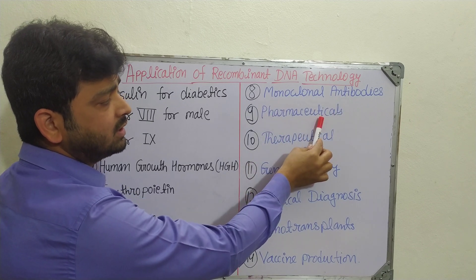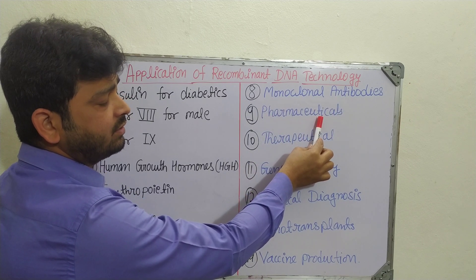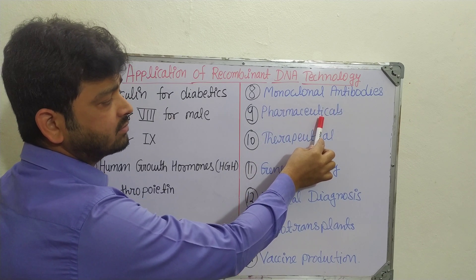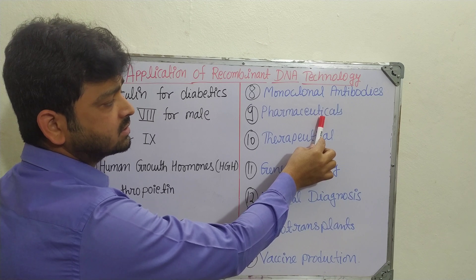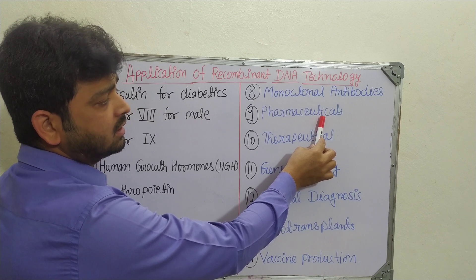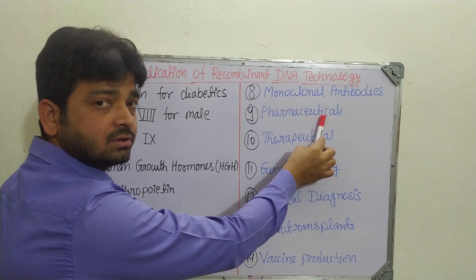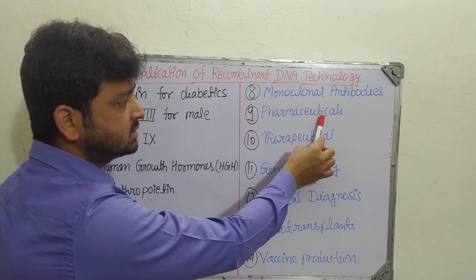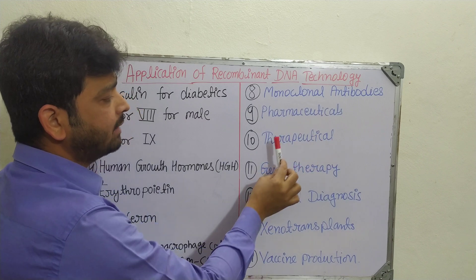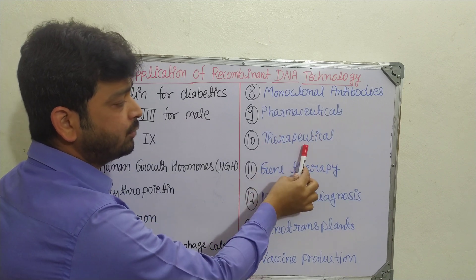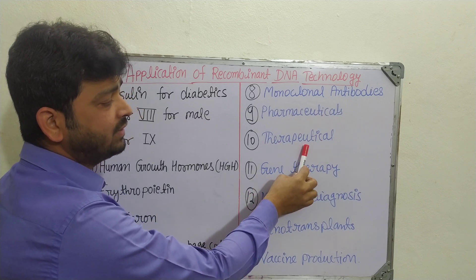Different types of pharmaceuticals can also be manufactured, such as medicines, drug modifications, and various formulations used in therapeutic applications. Certain types of therapies can be improved using this technology.